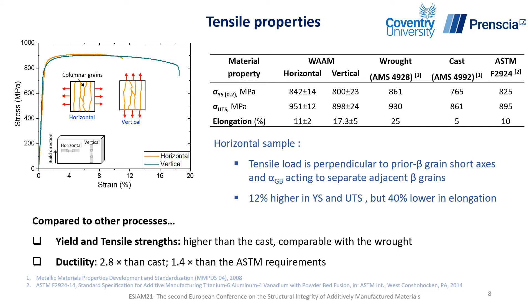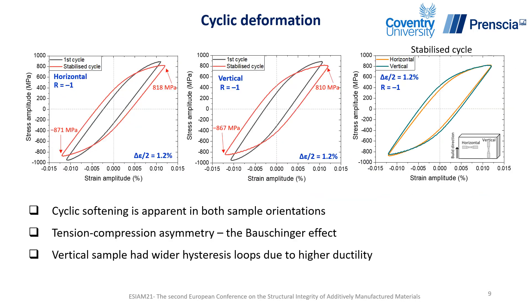When we looked at the ductility, compared to cast, WAAM Ti-64 has 2.8 times higher ductility and 1.4 times higher ductility than the ASTM requirements.